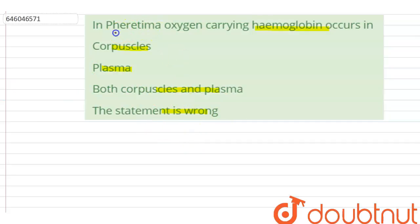So Pheretima is basically a genus of earthworms. In earthworms or in Pheretima, blood glands